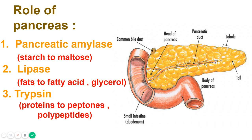The pancreatic juice contains enzymes that digest all principal components of food — carbohydrates, fats, and proteins. The enzymes secreted by the pancreas are pancreatic amylase, lipase, and trypsin. Pancreatic amylase is a carbohydrate-digesting enzyme, also known as amiloxin, and it digests starch into maltose.